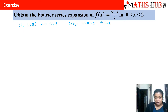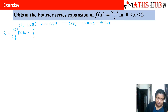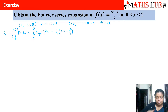Now let us calculate the value of a₀ first. a₀ = (1/l) ∫ from c to c+2l of f(x) dx. With l = 1, the integral is from 0 to 2 of (π - x)/2 dx. Taking out the factor of 1/2, integration gives πx - x²/2. Putting in the limits from 0 to 2: (1/2)(2π - 2) = π - 1.